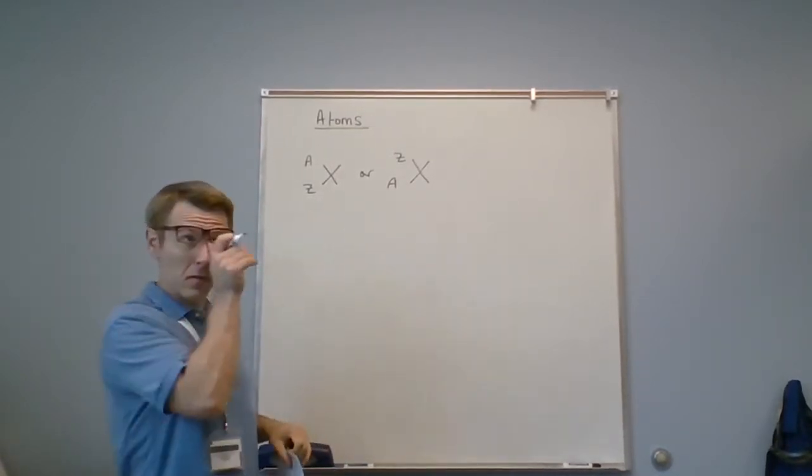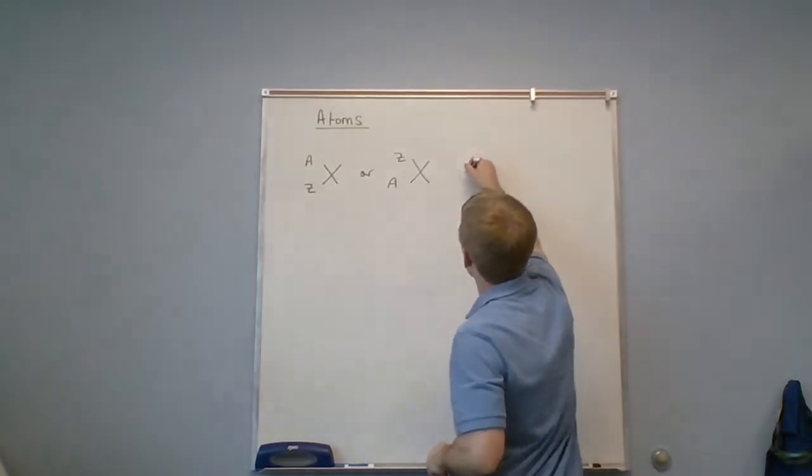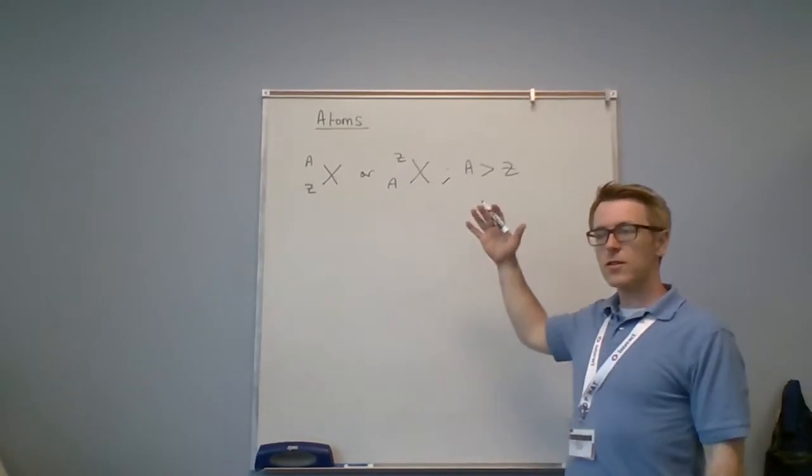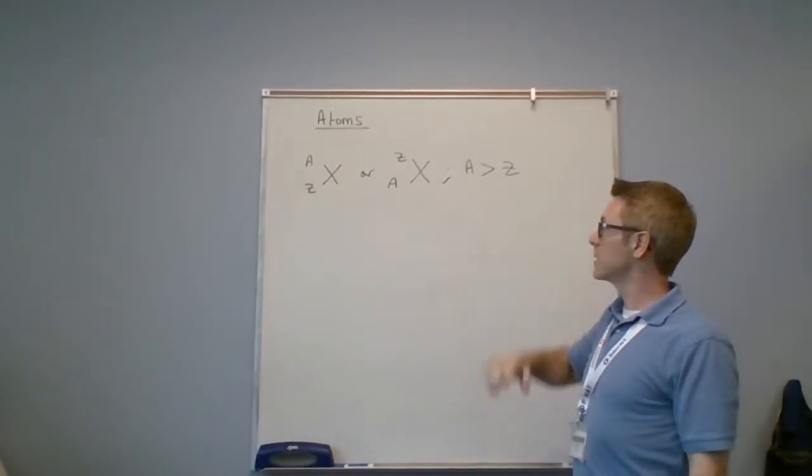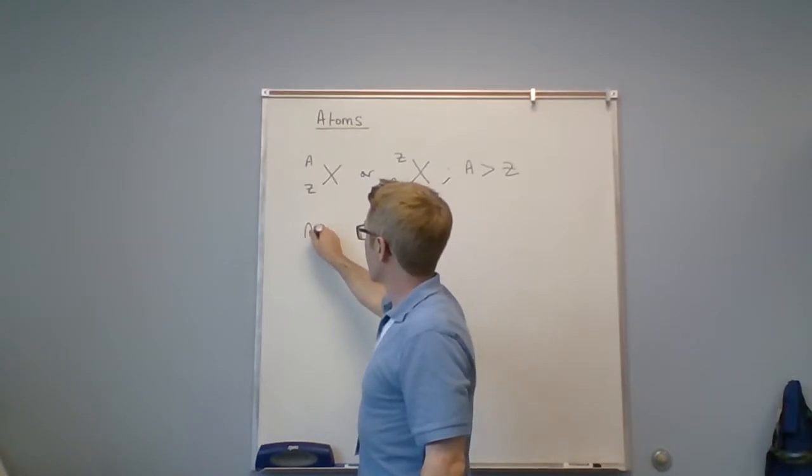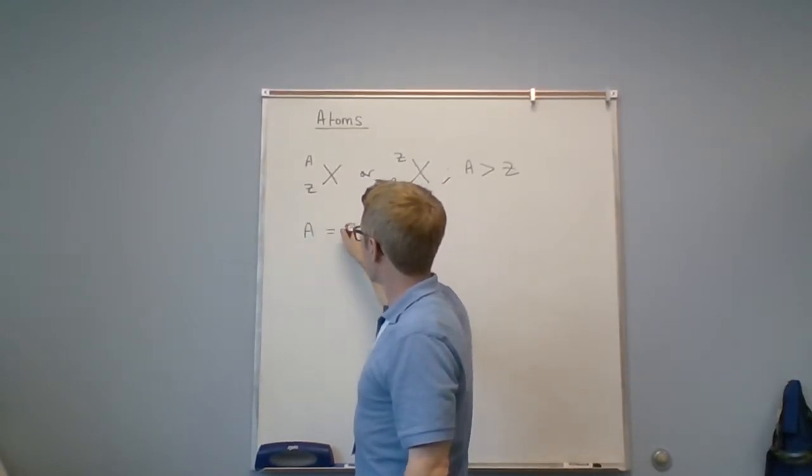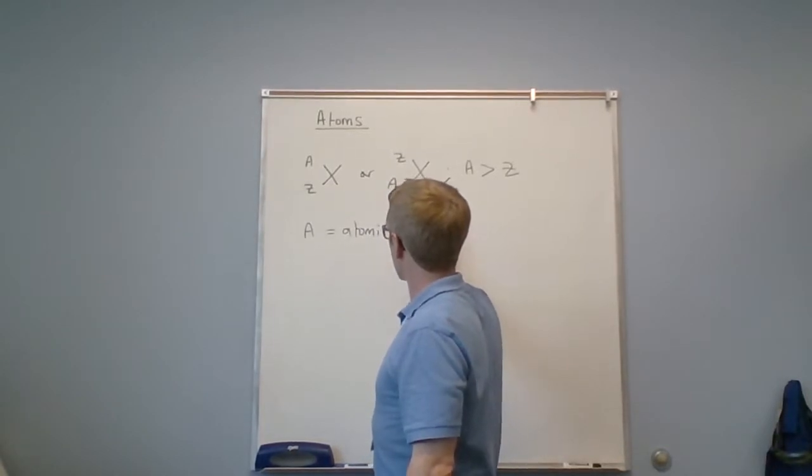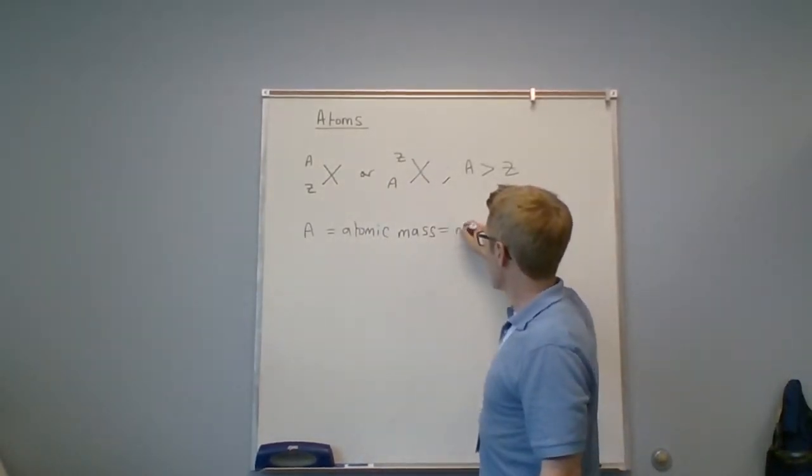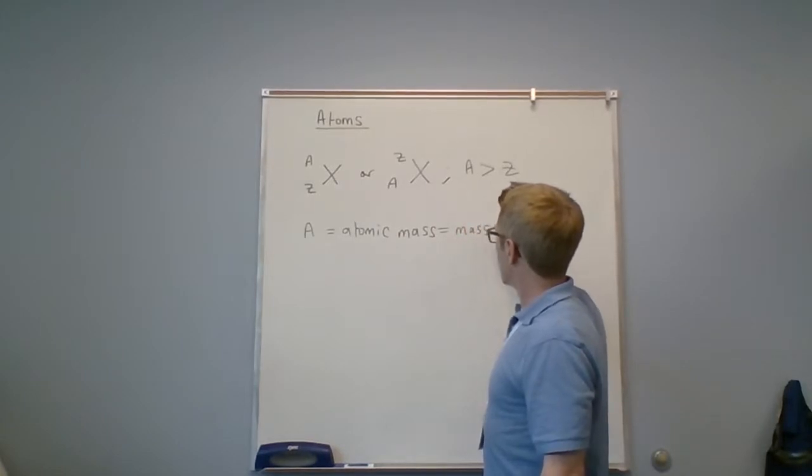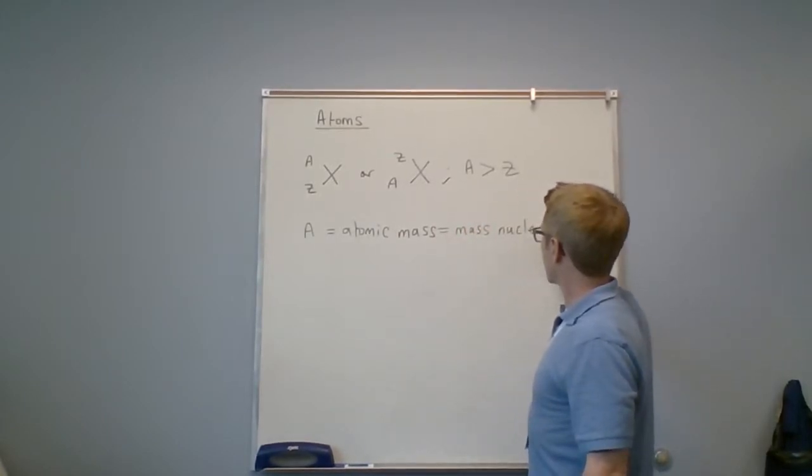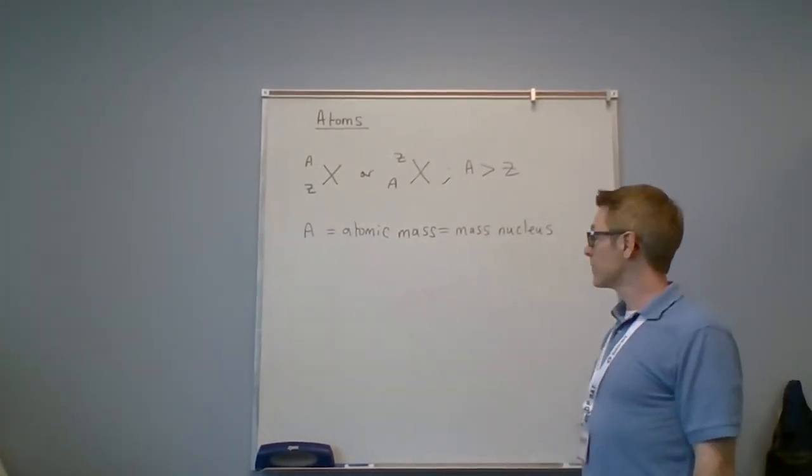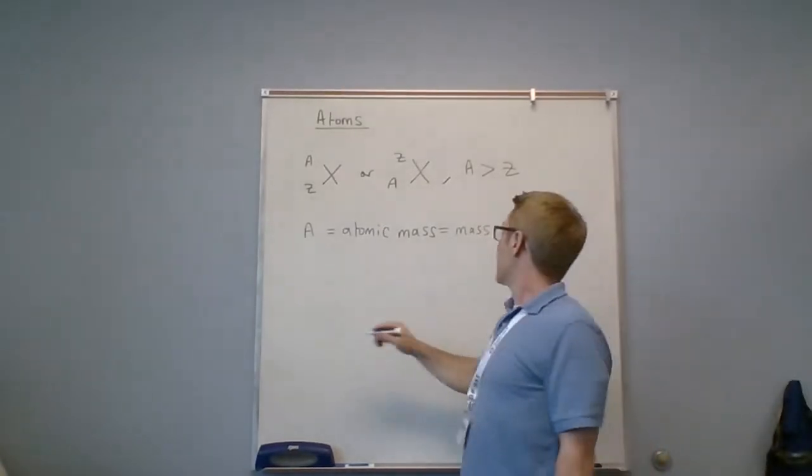So whichever is the larger of the two numbers for each element, that's going to be the a number. A is atomic mass, and this is essentially the mass of the nucleus. We'll see what the nucleus is in a second and who discovered it. Essentially, this is the mass of the atom for practical purposes.